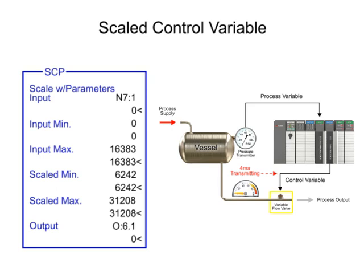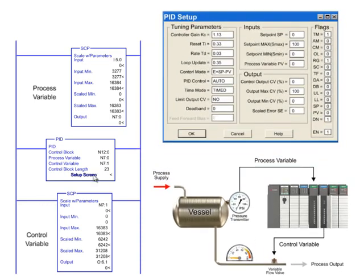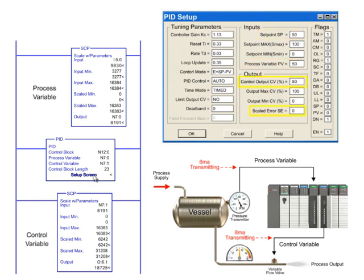The analog signal is then sent to the flow valve where the operating range is adjusted between 0 and 100%. With the data scaled using the SCP instruction, the process of controlling the pressure of the vessel to 50 PSI continues by entering the setpoint of 50 in the PID setup menu. As the PID instruction is executed, a scaled error is generated by subtracting the process variable from the setpoint. By increasing the control output, the error is reduced to attain the setpoint as the PSI is raised in the system. In other words, the valve position is gradually closed to reduce the pressure loss. Upon reaching the setpoint in the system, the control output and scaled error is reduced to zero.